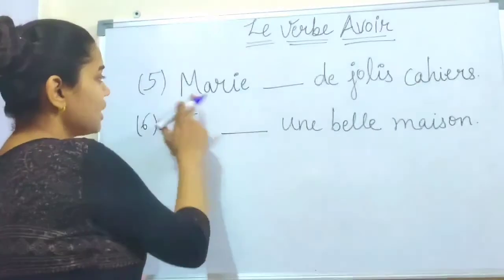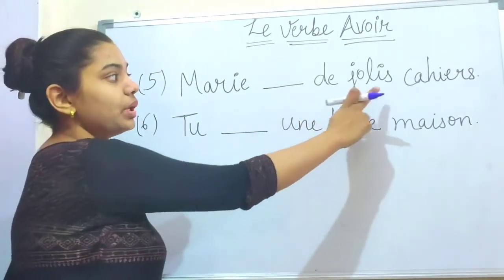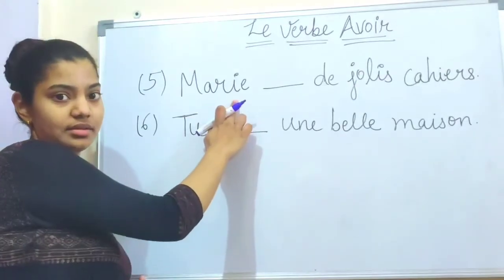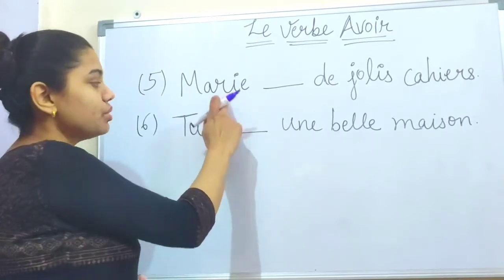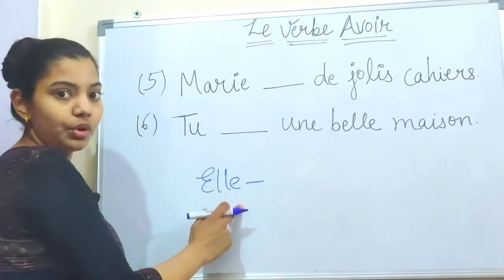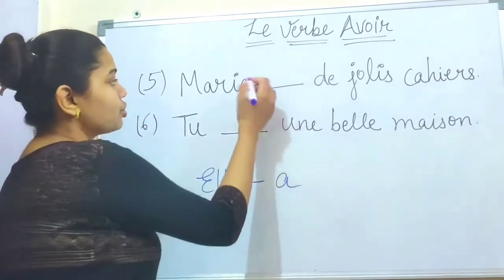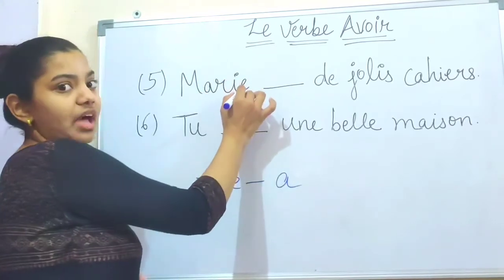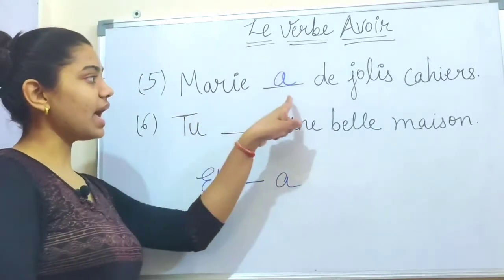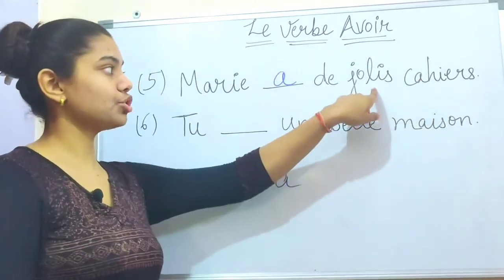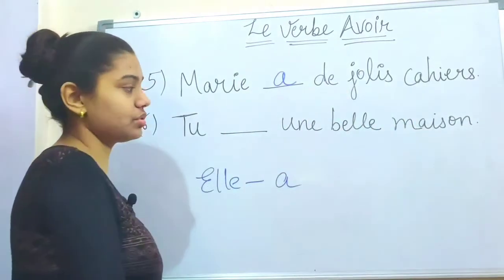The fifth sentence is: Marie ___ de jolis cahiers. Marie is feminine, so we use the conjugation for elle — which is 'a.' Therefore: Marie a de jolis cahiers, which means 'Marie has pretty notebooks.' Joli means 'pretty' and cahier means 'notebook.'